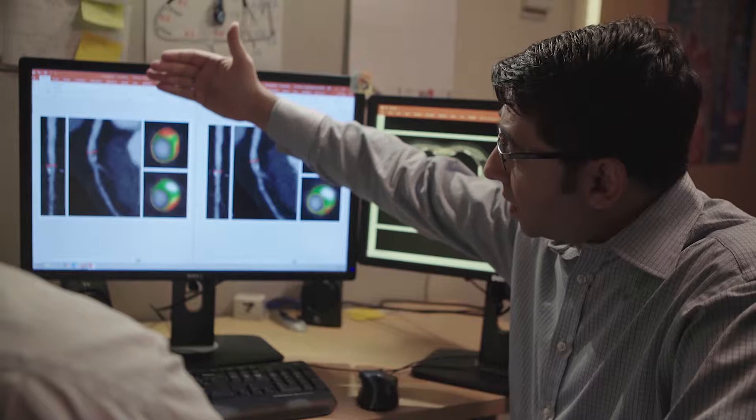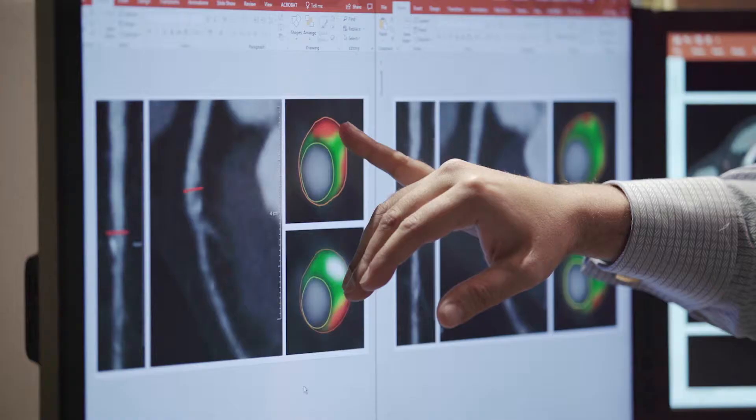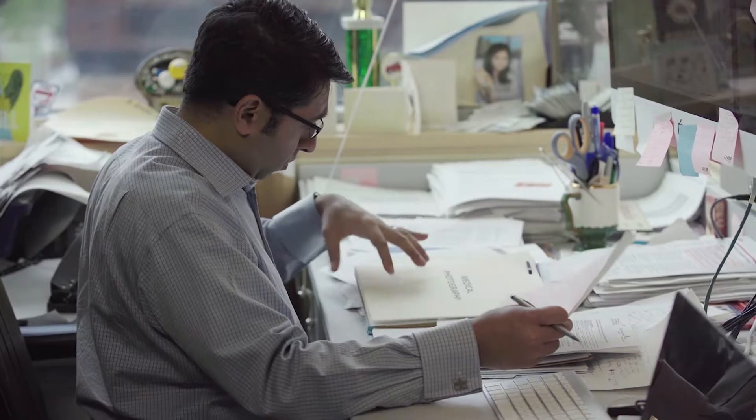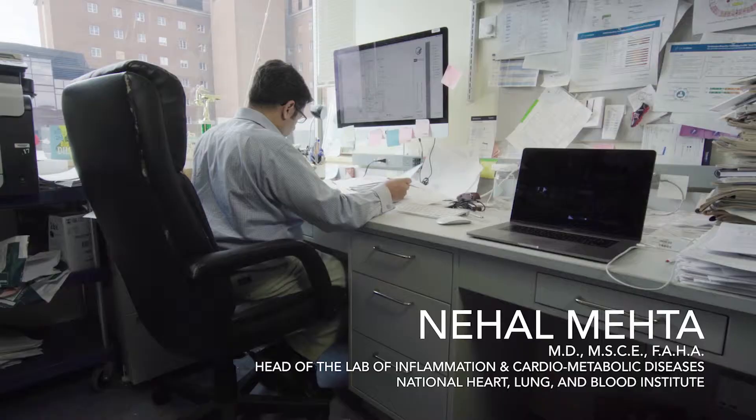I saw a 36-year-old with psoriasis, not this severe form. It was elbows and knees, and we had a coronary scan done on him, and he had heart artery plaque that looked like he was 60 years of age. And that's when I said, I got to figure this out.